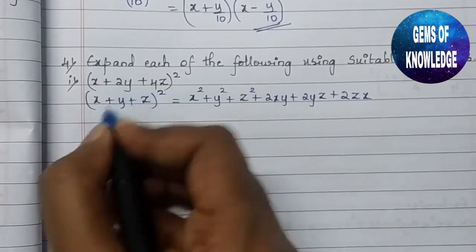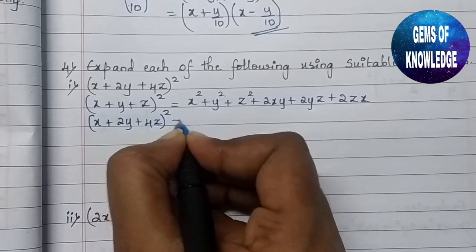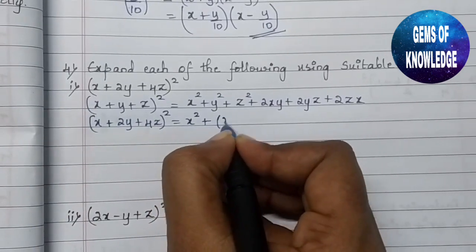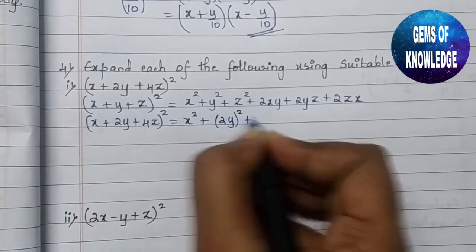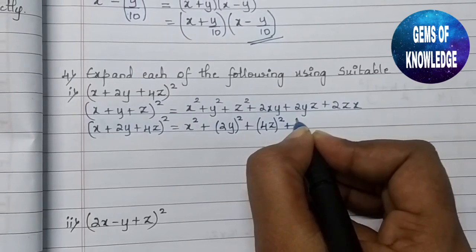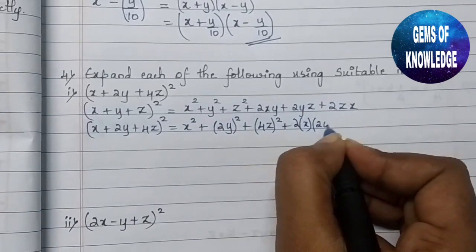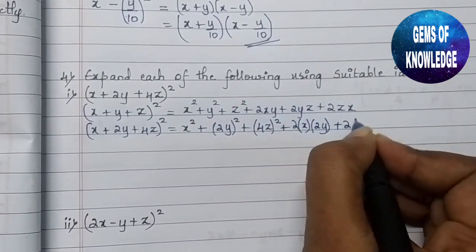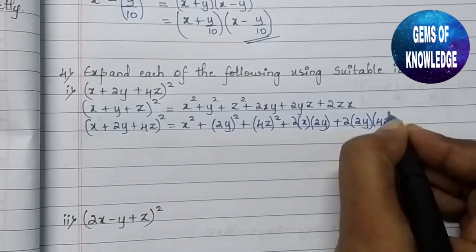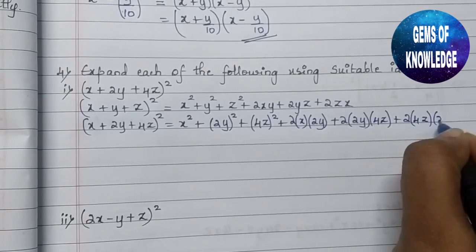So this expression is of the form (x + 2y + 4z)². Here x = x, y = 2y, z = 4z. Substituting: x², then (2y)², then (4z)², plus 2 times x times 2y, plus 2 times 2y times 4z, plus 2 times 4z times x.